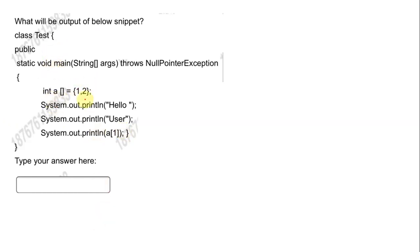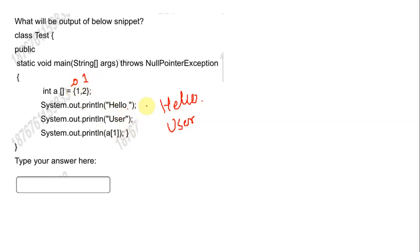Here we have a Java question: int a[] = {1, 2}. So 1 is at index 0 and 2 is at index 1. When we print using System.out.println, it prints 'hello' with a space on line 1, then 'user' without any space on line 2, and then the element at index 1 of array a, which is 2, on line 3. So the output is: 'hello ' on line 1, 'user' on line 2, and '2' on line 3.